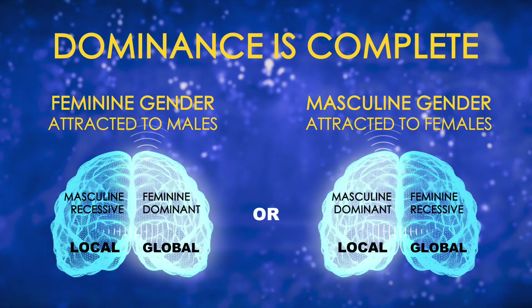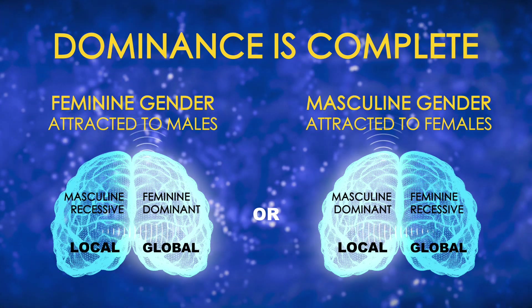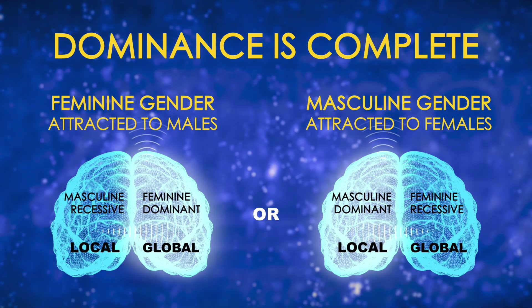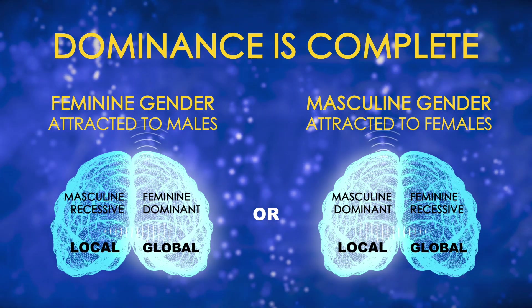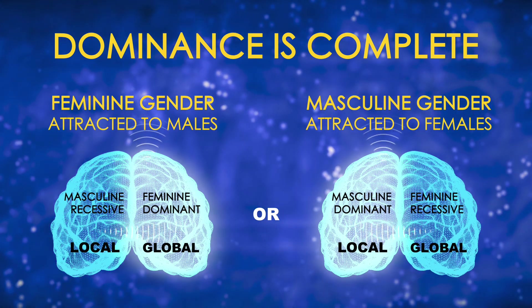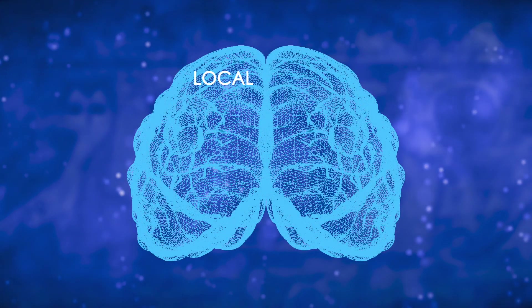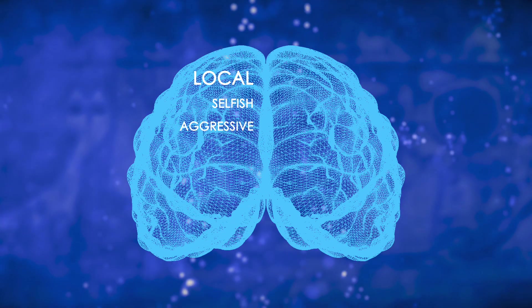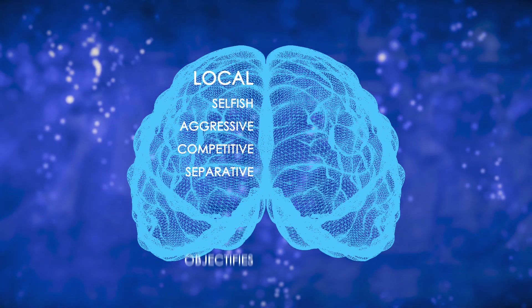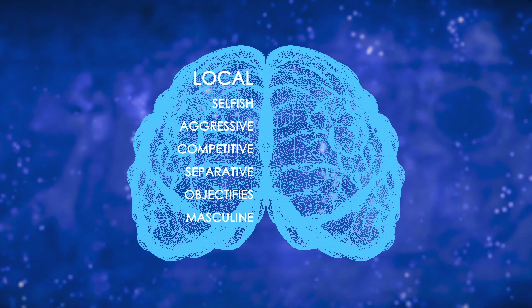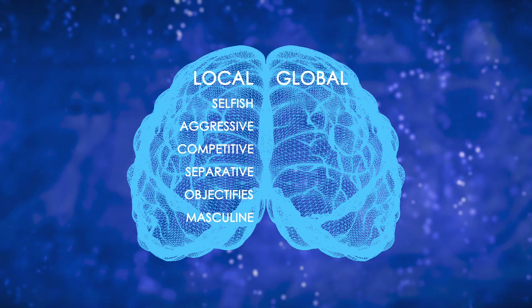When one system is dominant, the other is recessive and serves the dominant in a support role. Since either system can be dominant, complete dominance produces either feminine gender and an attraction to males, or masculine gender and an attraction to females, regardless of our sex. When dominance is complete, males tend to inherit a local viewpoint. A local viewpoint promotes selfish behaviors — it causes us to be aggressive, competitive, and separative. Our local system objectifies people and things. It has a masculine feel. Females, on the other hand, are more often informed by their global viewpoint.